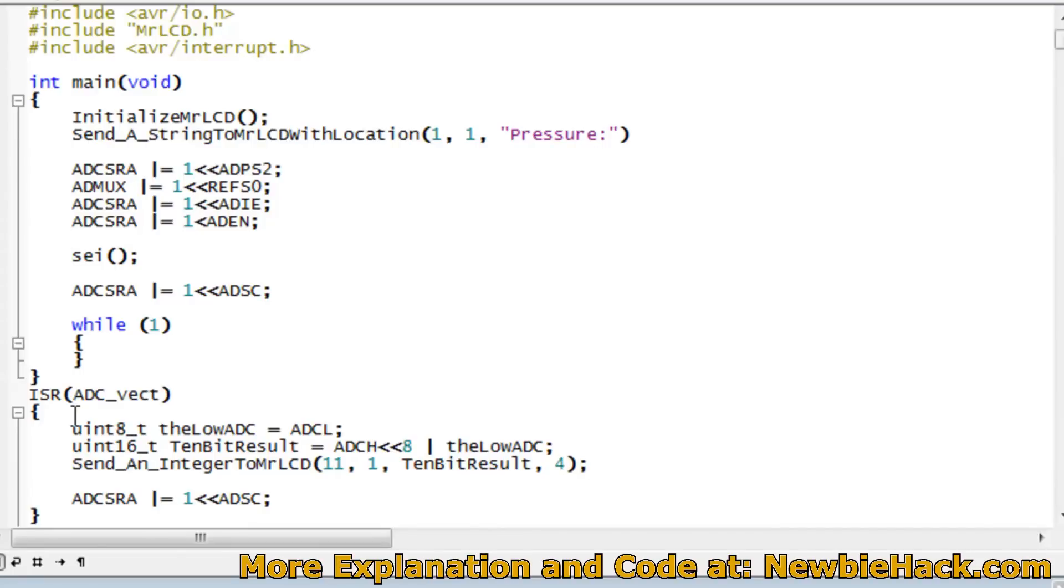I'm going to go ahead and do a make to see if I have any errors. And I do. So let's see what is going on here. I probably misspelled this one. Send a string to Mr. LCD with location. Let me check that. Now it looks like I actually forgot the semicolon on the end of that line. Let's try a make again. It looks like all the errors are gone. So it looks like it's okay to program. I'm going to go ahead and try to program it. See if I get an ADC number on the LCD.